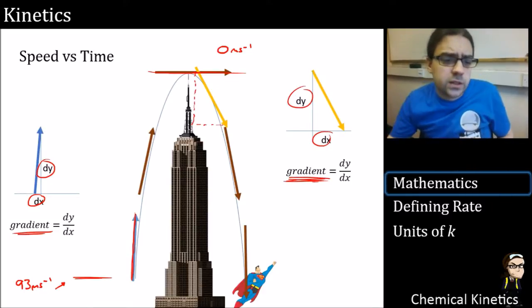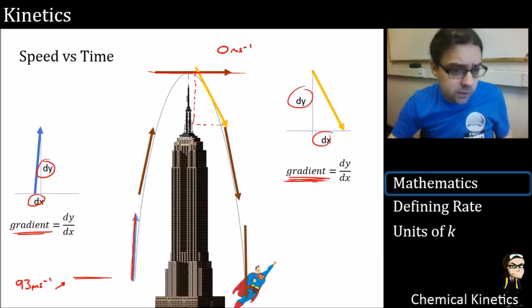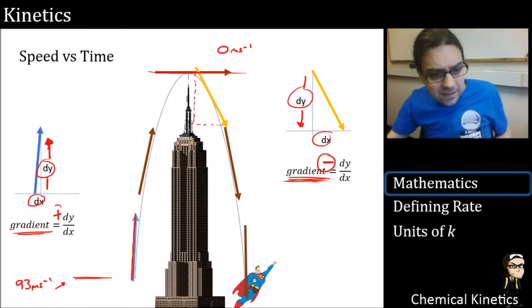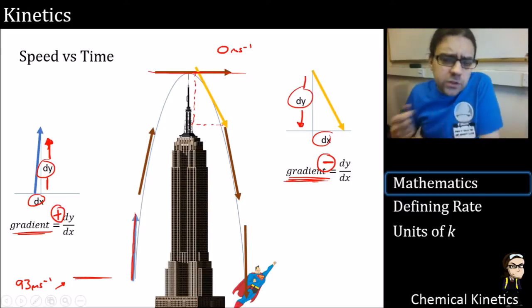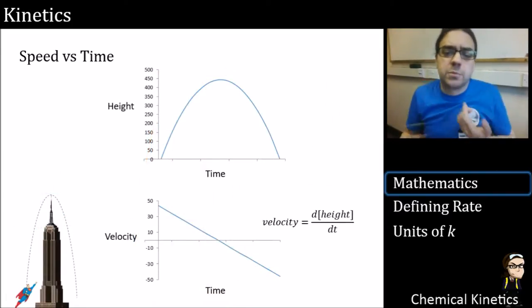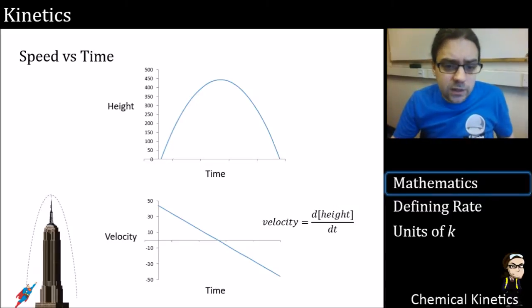The other thing you should notice is that gradients can be positive or negative. This change in y is going up, so it must be positive. This change in y is going down, so it must be negative. If we turn this into a bit more of an abstract graph, over time, height changes in this parabolic fashion.